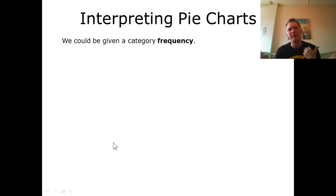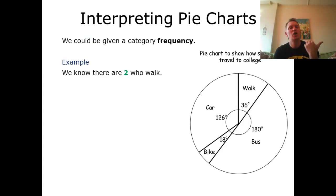But what if I've only been given the frequency for one of the categories? In this case I've just been told that two people walked. So I'm going to be using this two to calculate how many people in total were asked and then repeat the process I did previously.